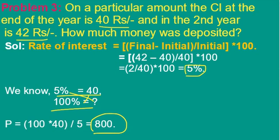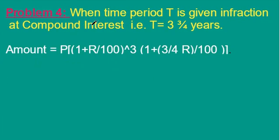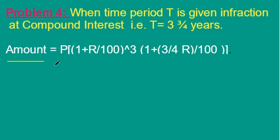See this situation: when the time period T is given in fractions at compound interest, for example if we have to calculate the compound interest for 3 and 3/4 years, we can use a specific formula to find out the amount.